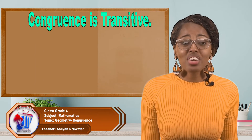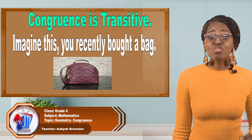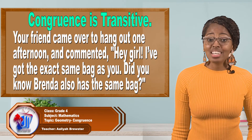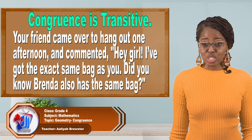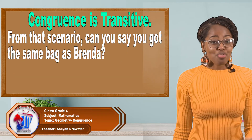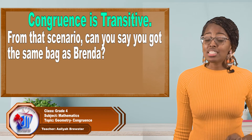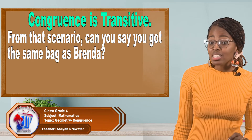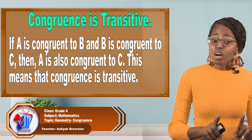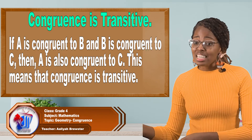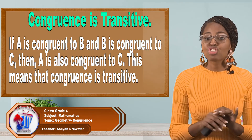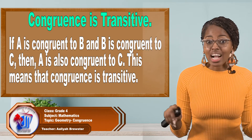Congruency is also transitive. Imagine this: you recently bought a bag. Your friend came over to hang out one afternoon and commented, 'Hey girl, I got the exact same bag as you. Did you know that Brenda also has the same bag?' From that scenario, can you say you got the same bag as Brenda? The answer is yes. Because if A is congruent to B and B is congruent to C, then A is also congruent to C. This means that congruency is transitive. In other words, all three of the bags are the same.